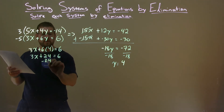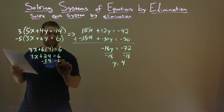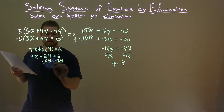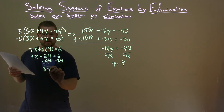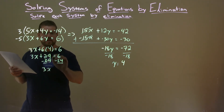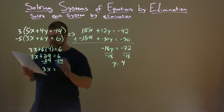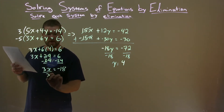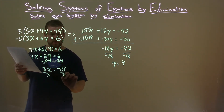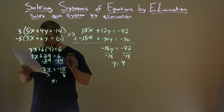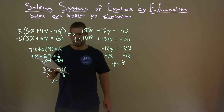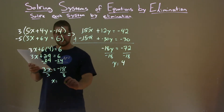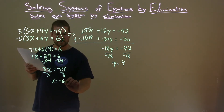Subtract 24 from both sides. 3x — the 24 cancels out. 6 minus 24 is negative 18. Divide both sides by 3. x by itself: negative 18 divided by 3 is negative 6.